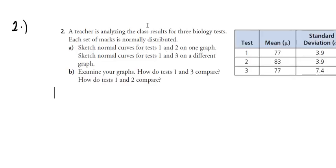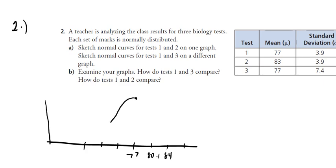Now, if we sketch the normal curve, test one is going to have a mean of 77. So let's say 77 is about here. And it has a standard deviation of 3.9. So what's 77 plus 3.9? That's going to be about 80.1. And then 3.9 is going to be 84, so on. Right? So you're doing this. And so those are the marks. And you simply draw to the best of your ability a sort of normal curve. That's not a very good one, but hit the point.